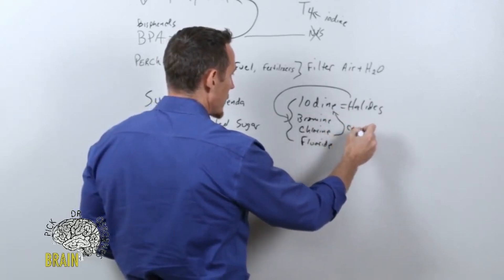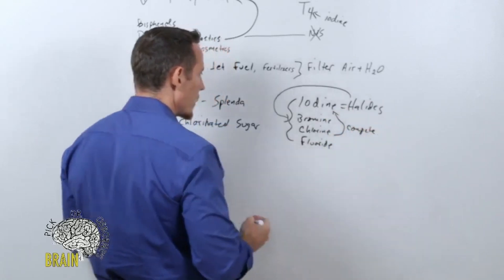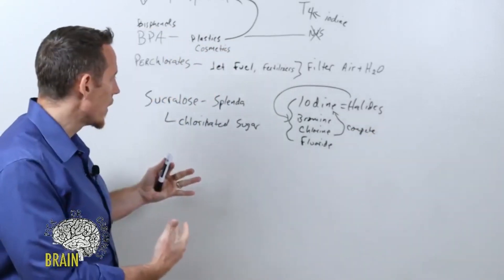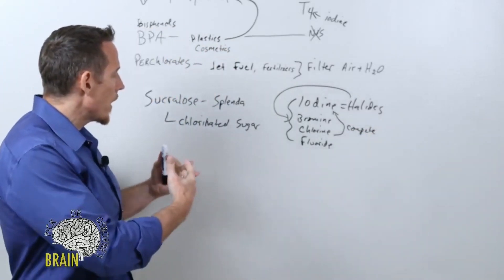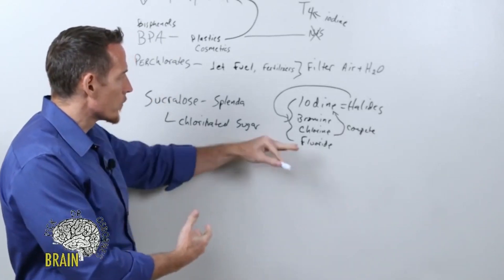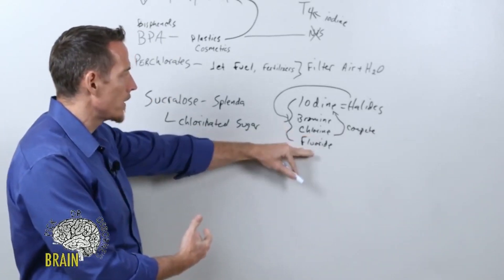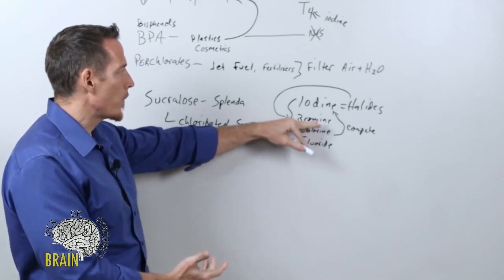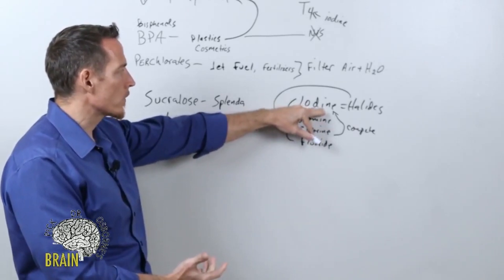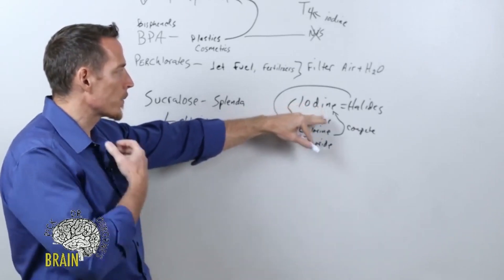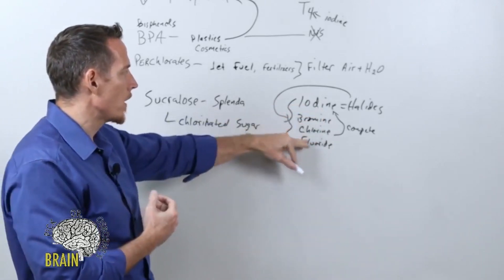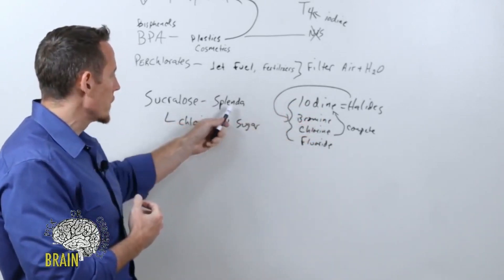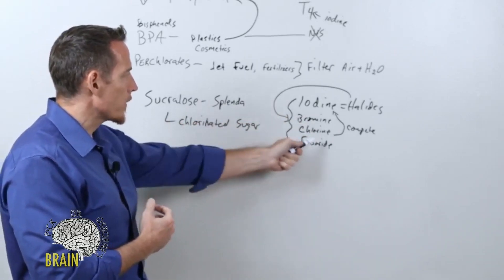They compete with iodine to get into your thyroid gland. So if you have a diet or environment that's very rich in bromine, chlorine, and fluoride, then you can increase your risk of developing low thyroid by iodine inhibition. In essence, you prevent iodine from properly being taken up by your thyroid because these three are competing with it.